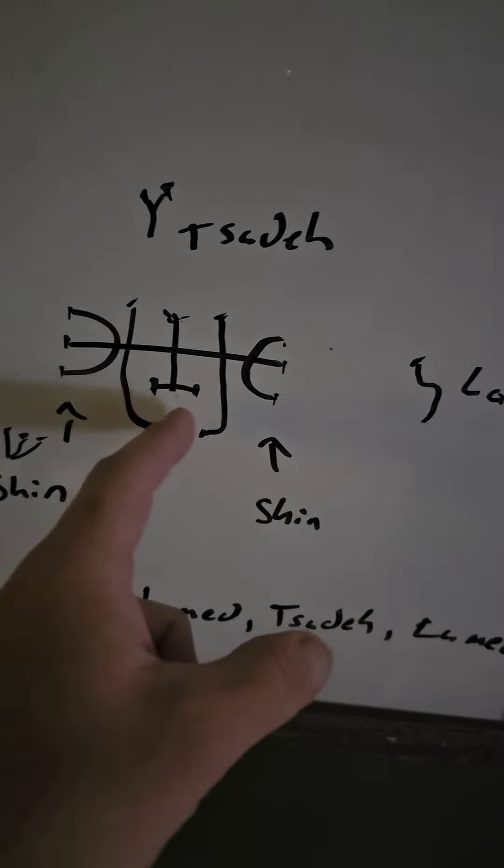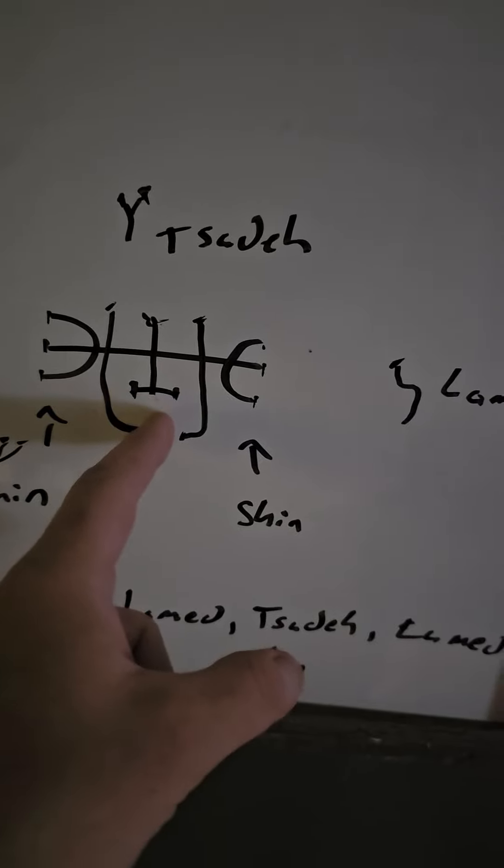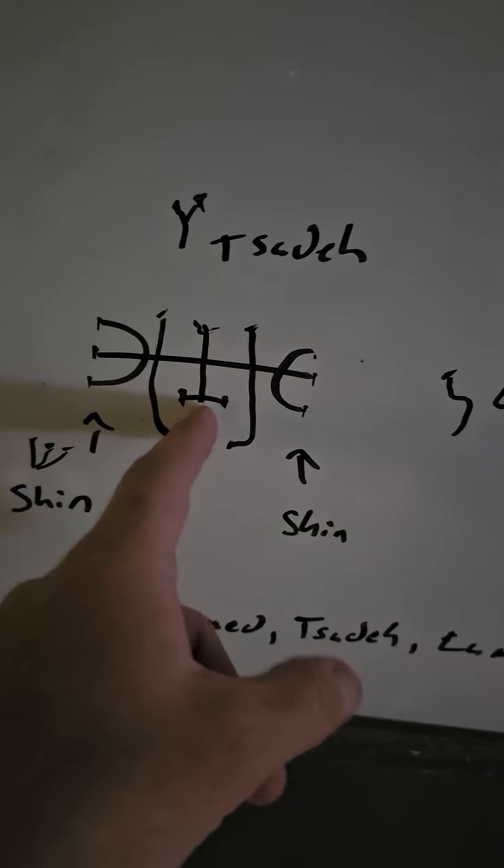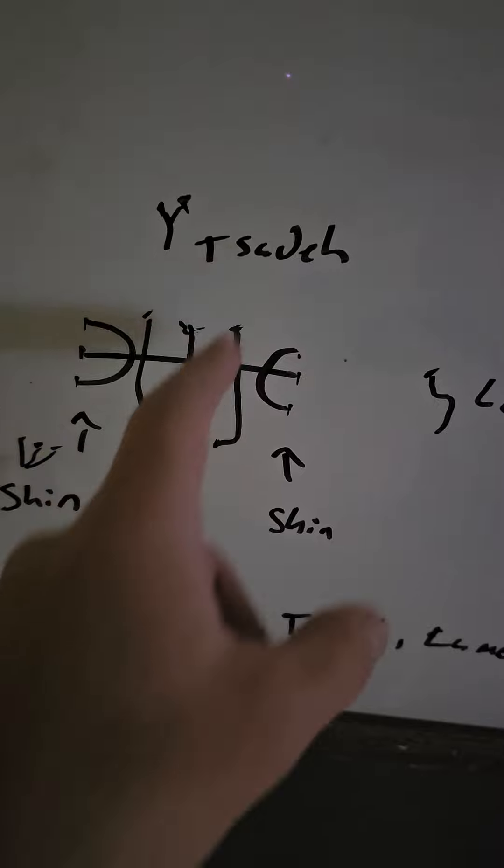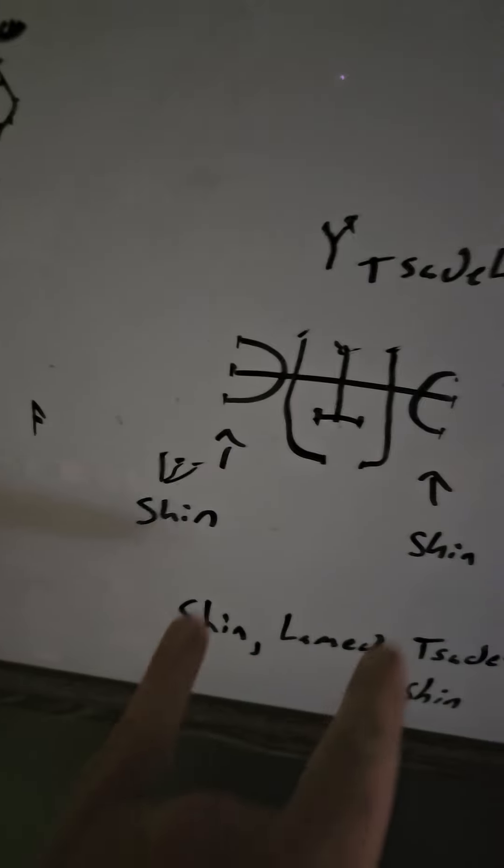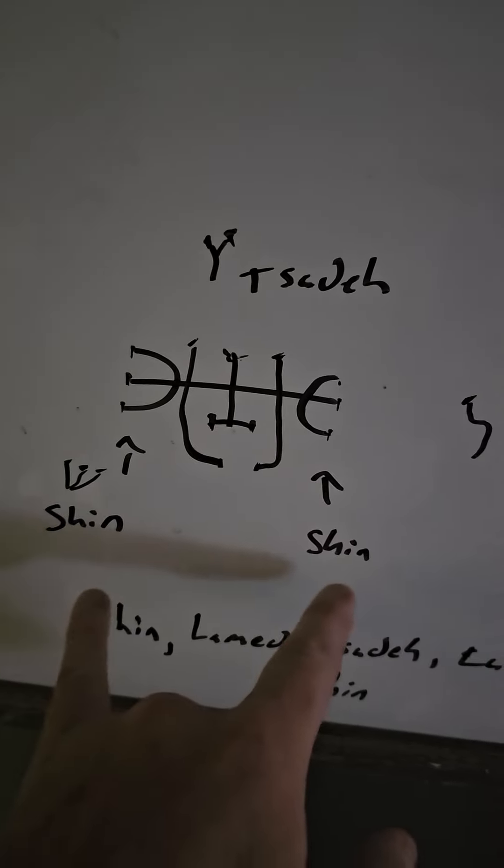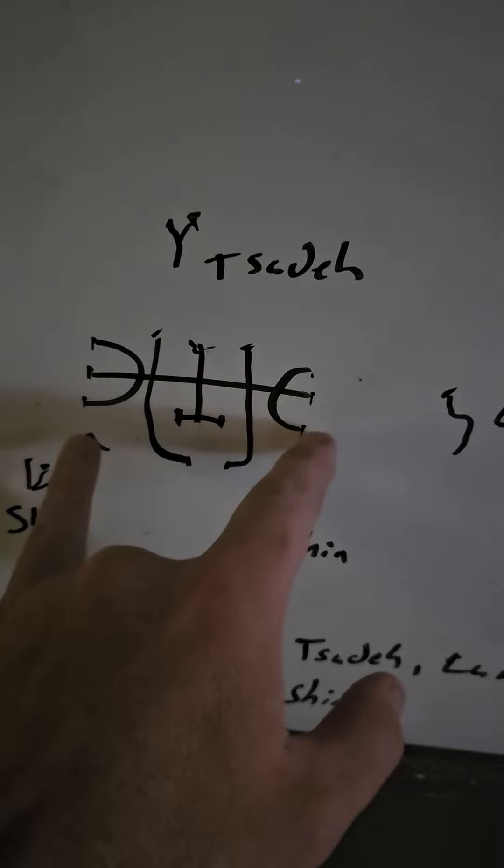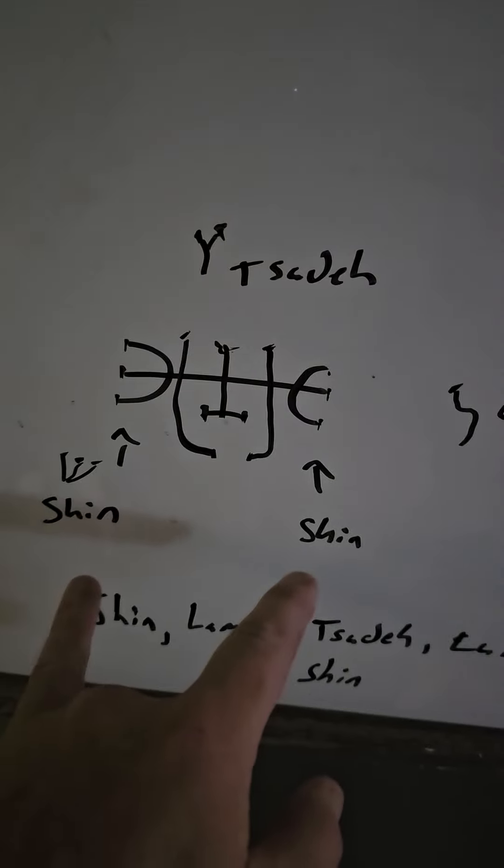This is Zalot. One Zalot. Sod. He has two shin, two spears. Two shin, and he has two lomet.